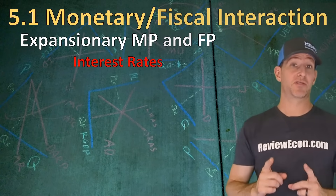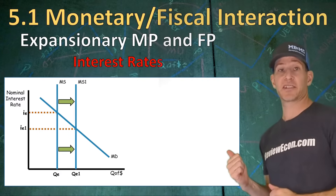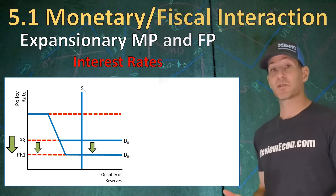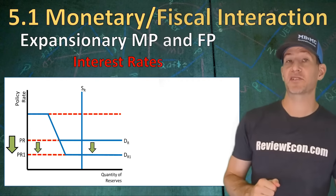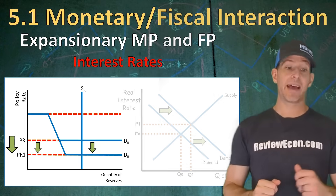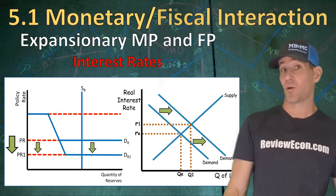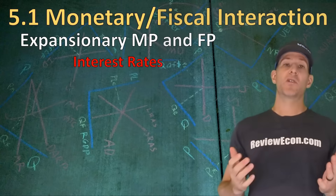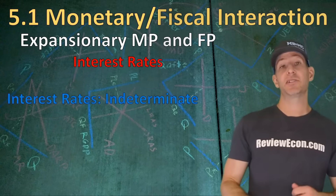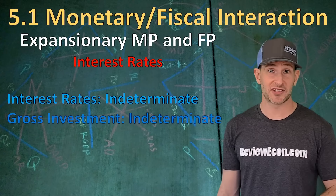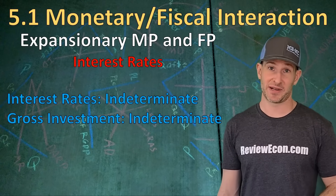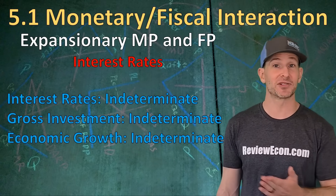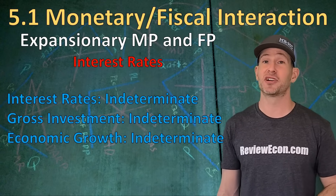But when it comes to interest rates, we're going to see a conflict here. Monetary policy is going to give us a lower interest rate — in a scarce reserve system, we see an increase in the money supply which decreases the interest rate; in an ample reserve system, we'll see a decrease in the interest on reserves rate, resulting in a lower policy rate. But expansionary fiscal policy results in more national debt, meaning an increase in the demand for loans or a decrease in the supply of loanable funds, so in the loanable funds market we'll see an increase in the interest rate. So when it comes to expansionary monetary and fiscal policy, interest rates are going to be indeterminate. Gross investment is also indeterminate, and we can't determine if there was an increase or decrease in the growth rate as a result of these two combined policy actions.